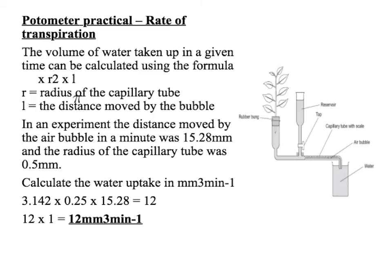You could be asked to work out the rate of transpiration using a potometer. Rate means per unit time — per minute or per second — so something divided by time. In this case it would be the volume of air — the volume of air lost from the plant per minute or per second. You could use the distance travelled by the bubble per minute or per second, but that wouldn't be a true rate of transpiration.